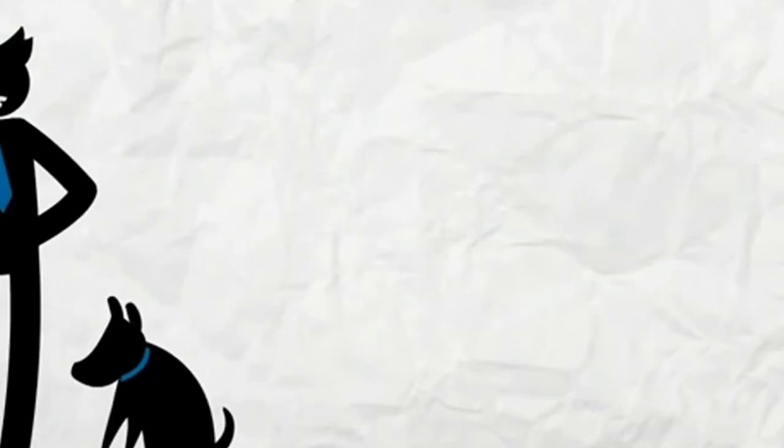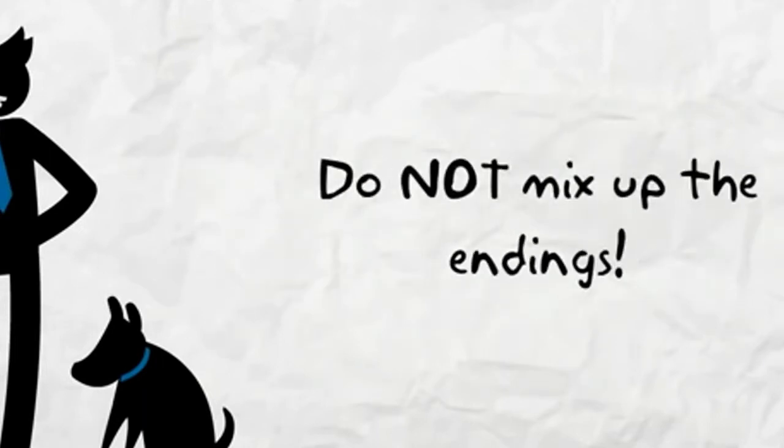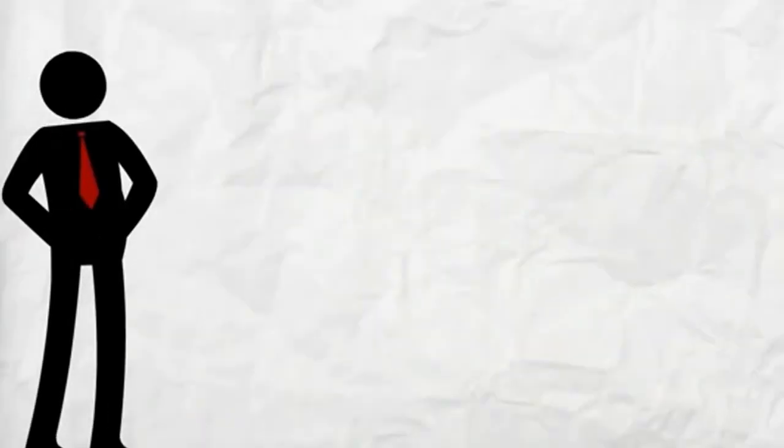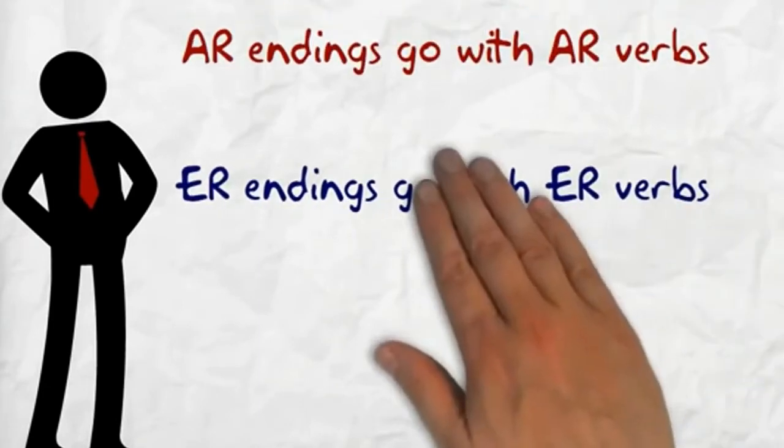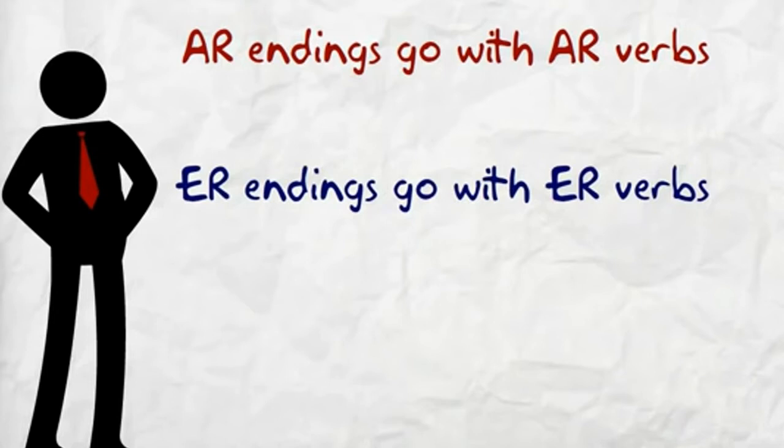Each type of verb has a different set of endings to attach to the base verb. You cannot mix up the endings. AR verb endings must always attach to AR verbs. ER verb endings must attach to ER verbs, and IR verb endings must attach to IR verbs.